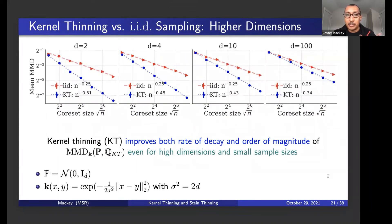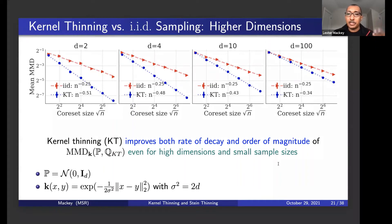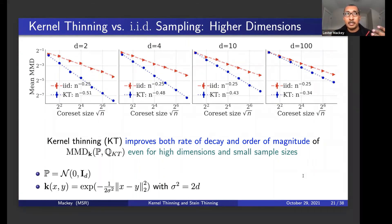What happens as you move into higher dimensions? Previously I was looking at two-dimensional mixtures of Gaussians. Here I'm using a standard Gaussian target with dimension ranging from two up to 100. What we find is that even for very small sample sizes in higher dimensions — just four or eight points in dimension 100 — you still see improvements both in the rate of decay and order of magnitude of MMD. Log factors are great when n is big, but might hurt when n is small — yet we actually see gains even when n is small.